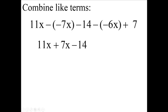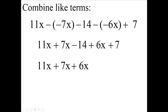Bring down the negative 14. Two negatives make a plus, a positive. Bring down the 7. Now we have my 11x, my 7x, and I'm going to put the 6x next. I'm going to commute these two. Put the negative 14 and then the 7.